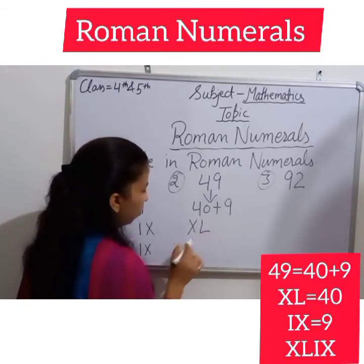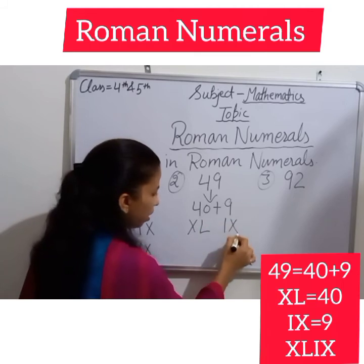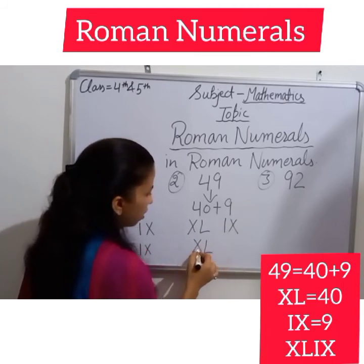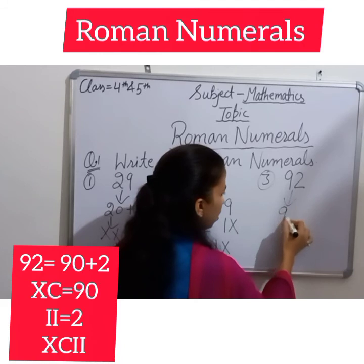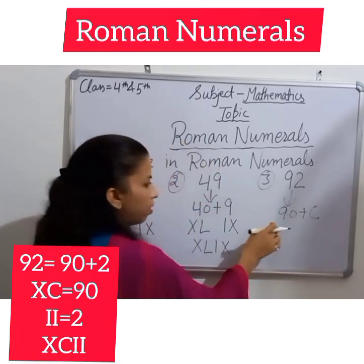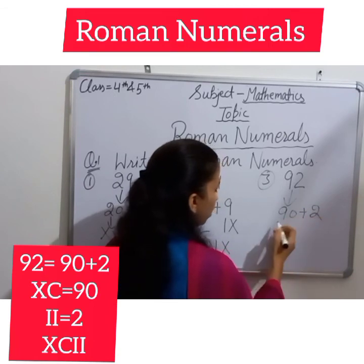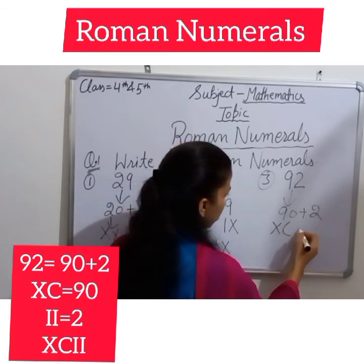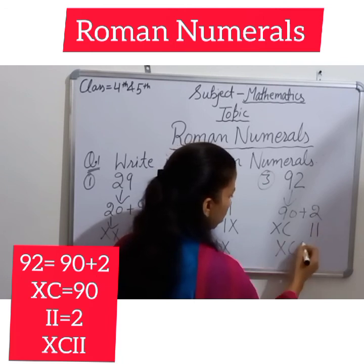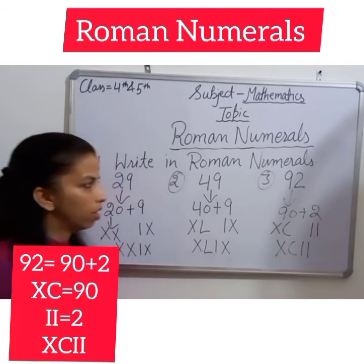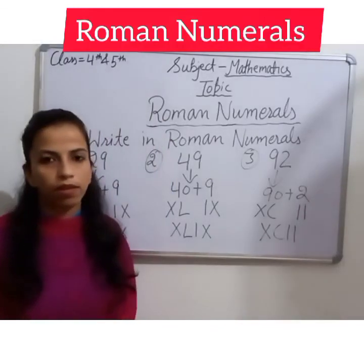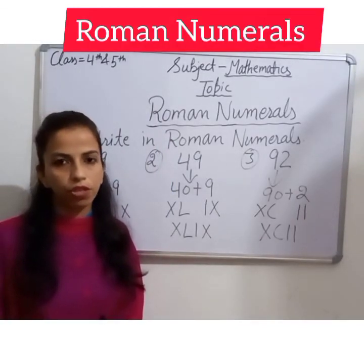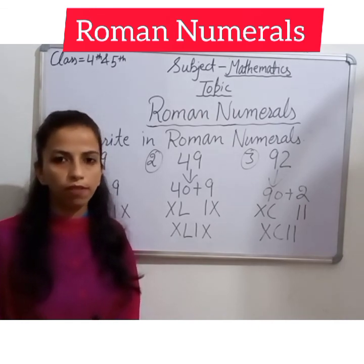Next, 49: you can write it as 40 plus 9. The Roman numeral for 40 is XL and for 9 is IX, so 49 is XLIX. Another example is 92: it is 90 plus 2. The Roman numeral for 90 is XC and for 2 is II, so 92 is XCII. Students, I hope after this discussion of the rules of Roman numerals you will all be able to write Roman numerals. Thank you.